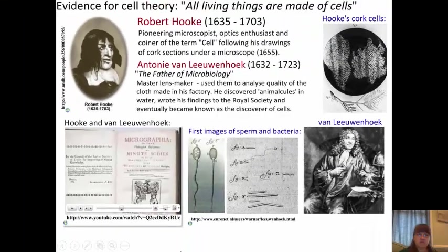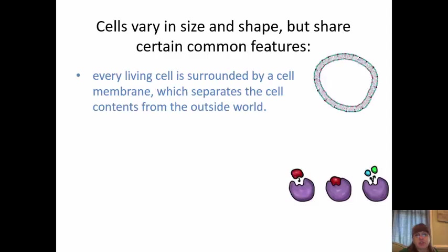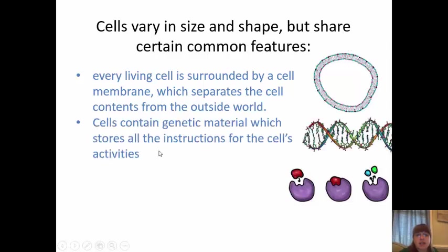What a great little video. Cells vary in shape but share several common features. One feature is that every living cell is surrounded by a cell membrane, which separates the cell from the contents of the outside world. The second thing is that cells contain genetic material, which stores all the instructions for the cell's activity. That genetic material can be DNA or RNA.